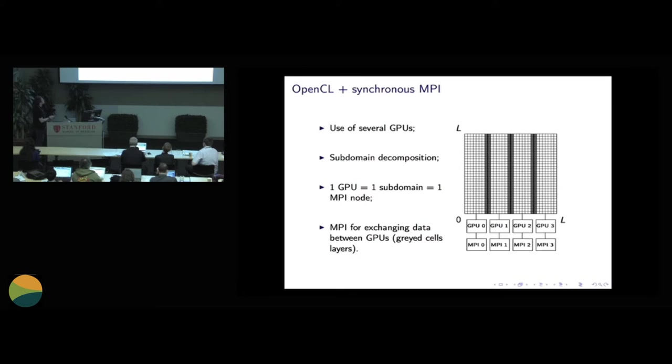You can also use several GPUs. So you split your grid into several subdomains. Here you have four subdomains in this example. We associate one GPU to one subdomain. And we also associate each GPU to one MPI node.